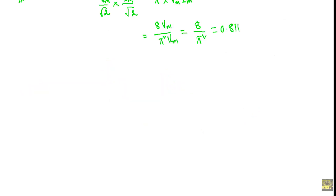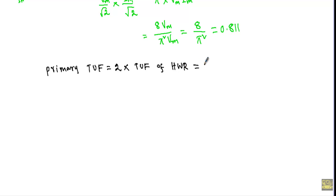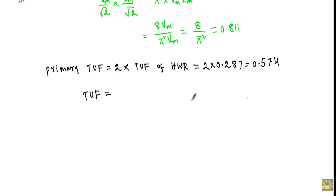The primary transformer utilization factor will be twice the TUF of a half wave rectifier. Since the TUF of a half wave rectifier is 0.287, the primary TUF is 0.574. Therefore, the overall transformer utilization factor of the center-tapped transformer is the average of 0.811 and 0.574, which equals (0.811 + 0.574) / 2 = 0.692.